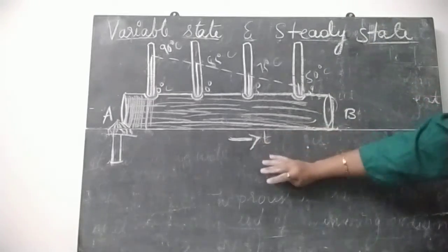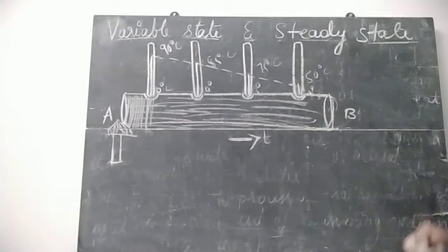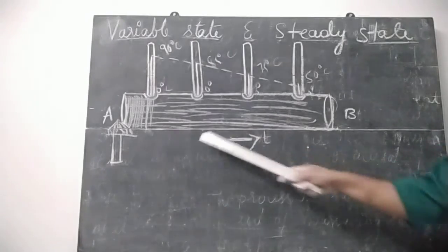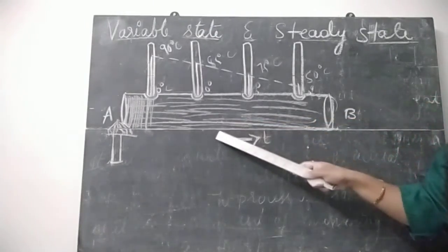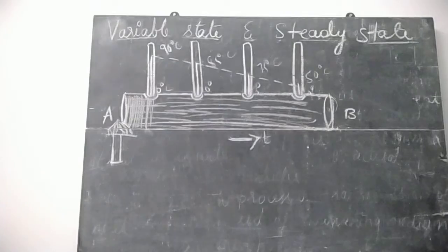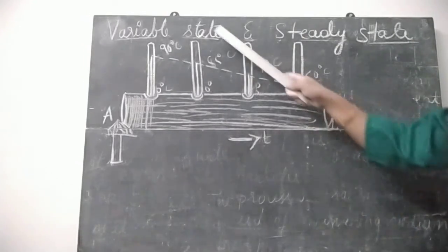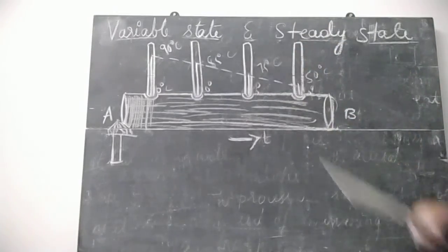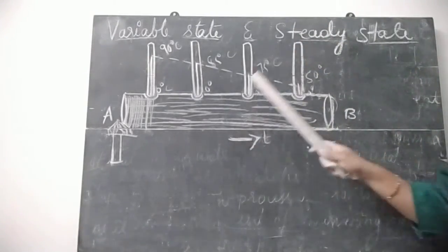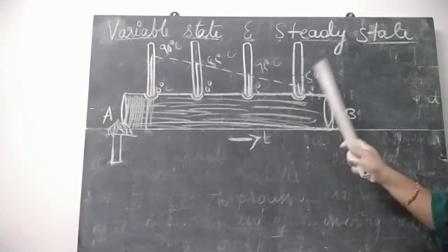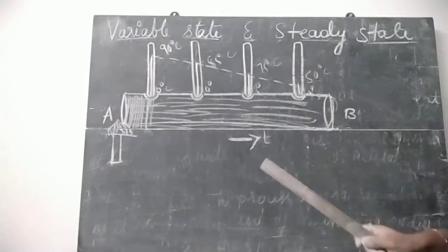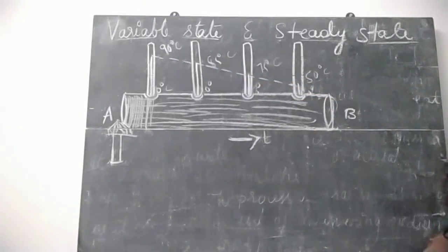So when a metallic rod is heated it achieves two states: variable state and steady state. In variable state, as heat is applied the temperatures rise over time. In steady state, after some time, the temperatures shown by all thermometers remain constant — there is no variation in the readings of the thermometers.